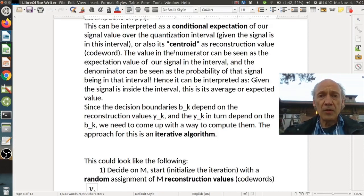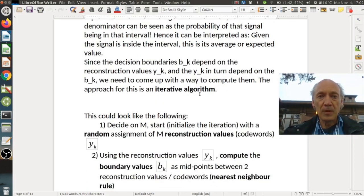The value in the numerator can be seen as the expectation value of our signal in the interval and the denominator can be seen as a probability of that signal being in this interval. Hence it can be interpreted as given the signal's inside the interval, this is its average or expected value. Since the decision boundaries b_k depend on the reconstruction y_k and the y_k in turn depend on the b_k, we need to come up with a way to compute them and the approach for this is an iterative algorithm.